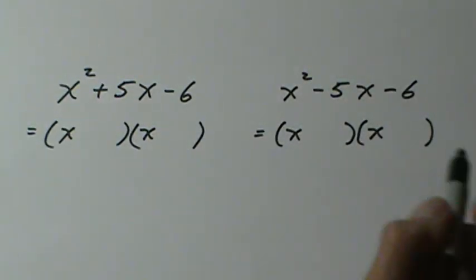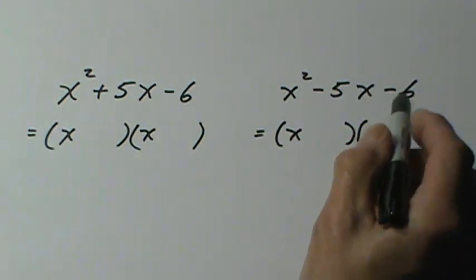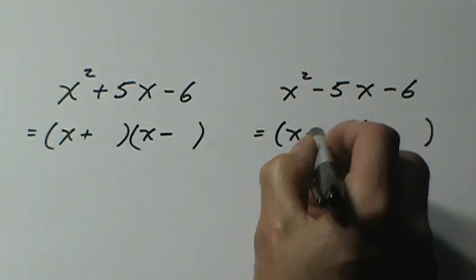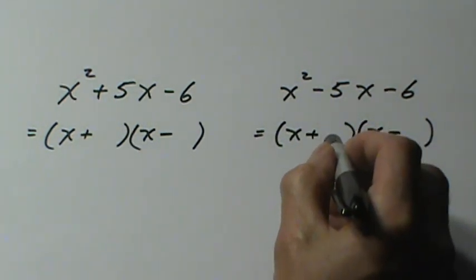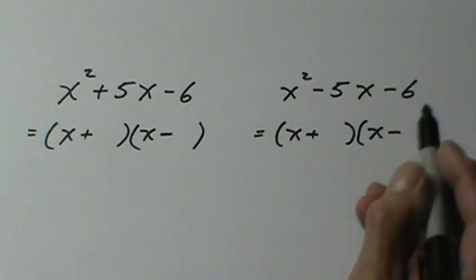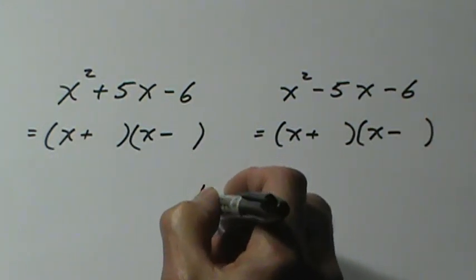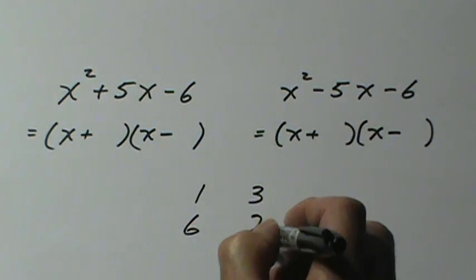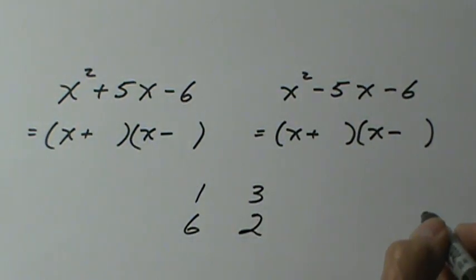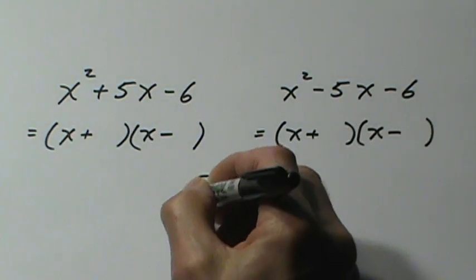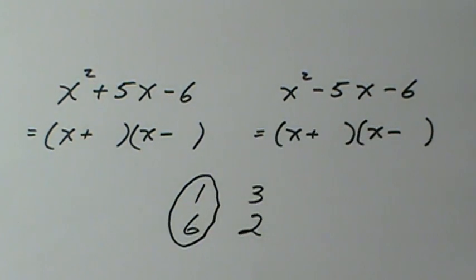Now the harder ones are the ones with a negative at the end because that tells us that the signs are different. After all, a positive times a negative gives us a negative 6 on the end. Once again we need factors of 6: 1 and 6 or 3 and 2. But this time because the signs are different we need a difference of 5, so we select the 1 and 6.